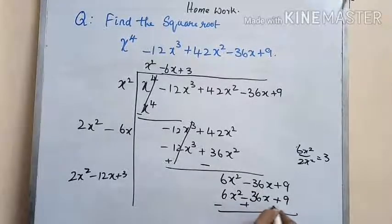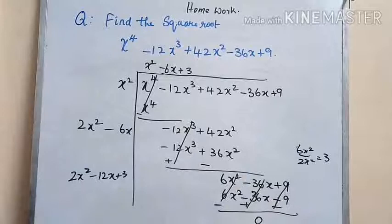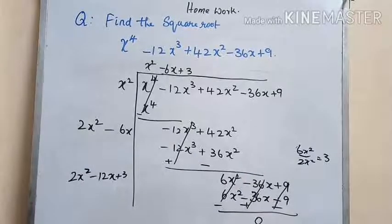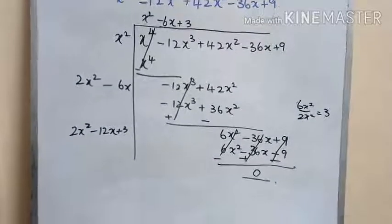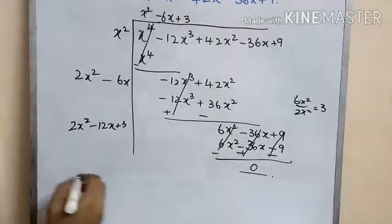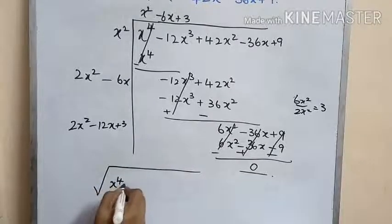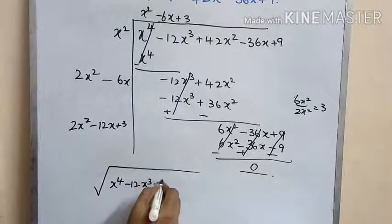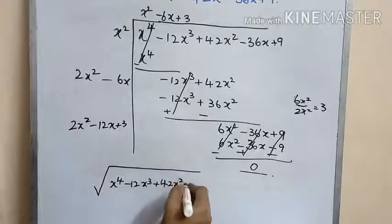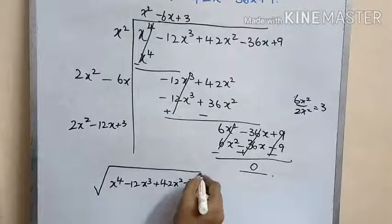The remainder after changing the sign and subtracting is 0. Since the remainder is 0, this shows the given polynomial is a perfect square. So the square root of x⁴ minus 12x³ plus 42x² minus 36x plus 9 is equal to x squared minus 6x plus 3, within modulus.